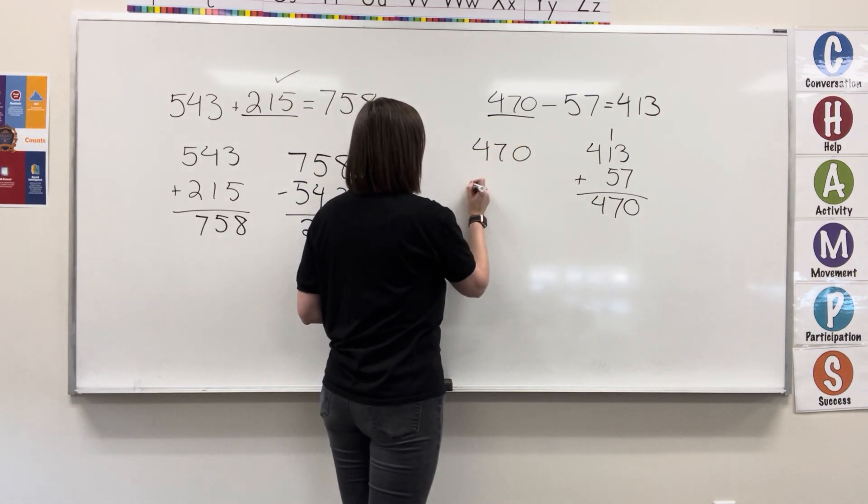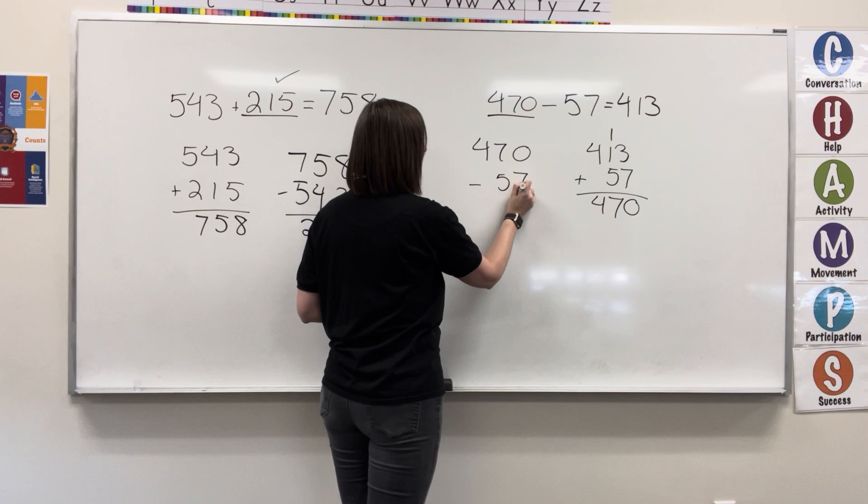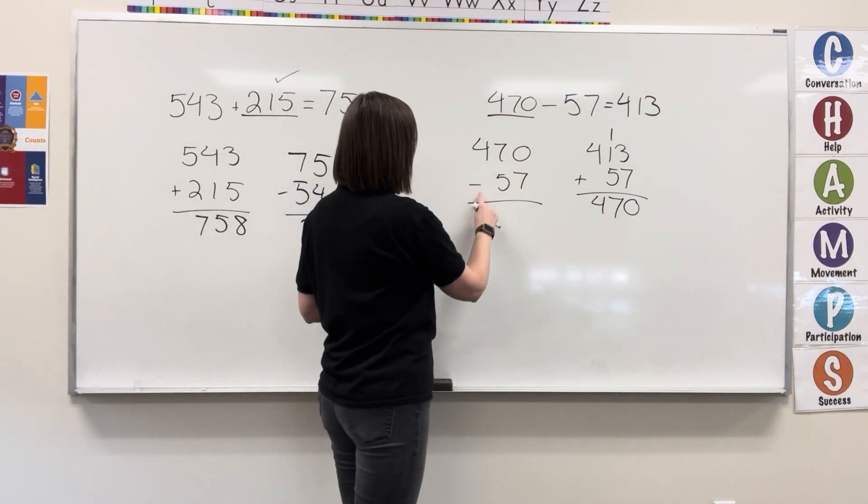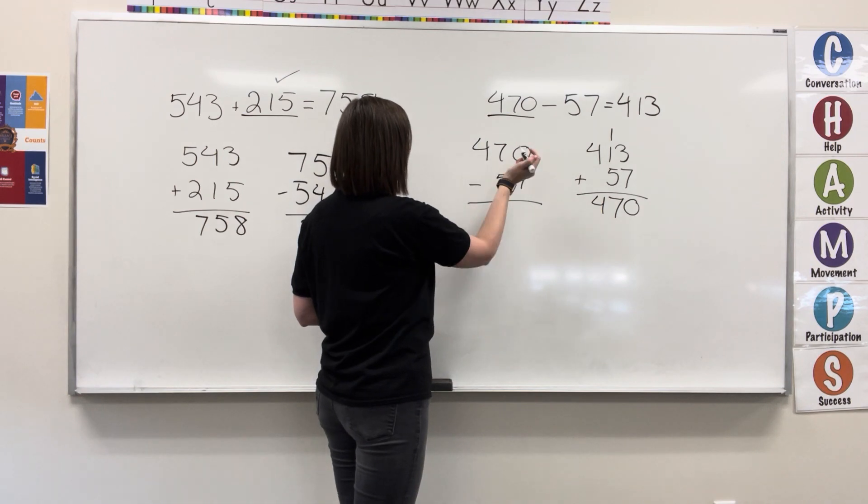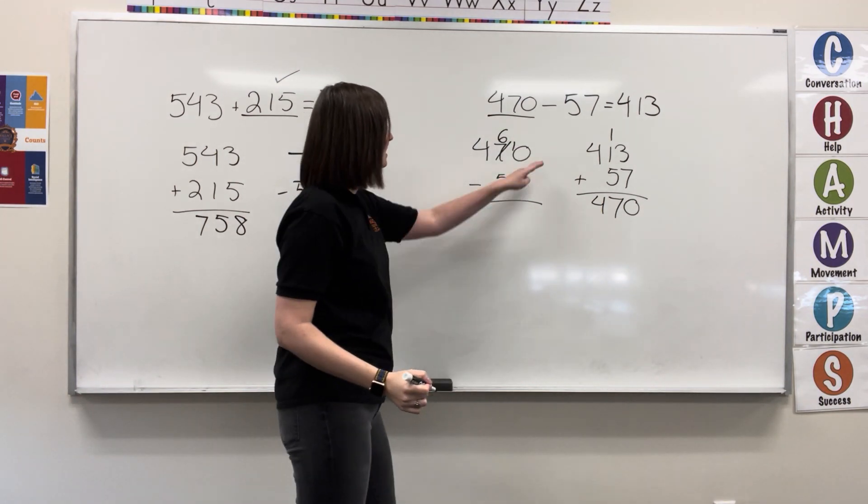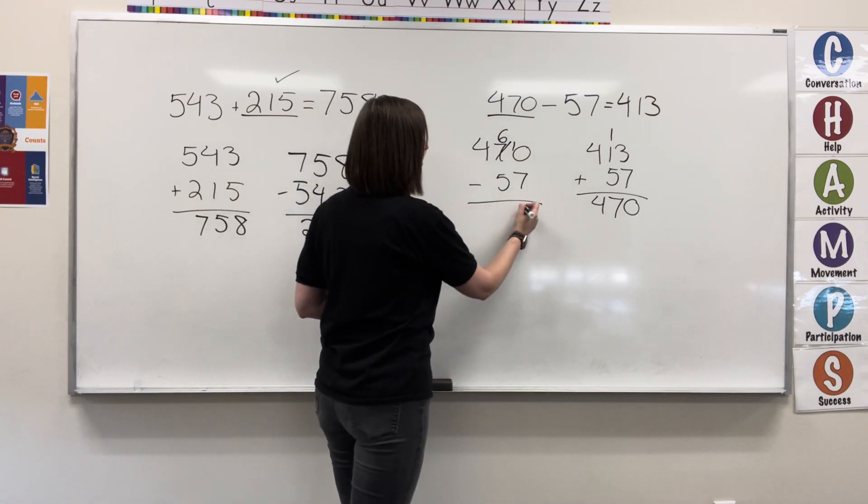470 minus 57. Let's check. 0 minus 7, can't do it. Go next door. 7 becomes 6, 0 becomes 10. 10 minus 7 equals 3. Write the 3.